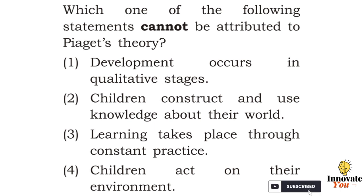Question 2. Which one of the following statements cannot be attributed to Piaget's theory? Option 1: Development occurs in qualitative stages. Option 2: Children construct and use knowledge about their world. Option 3: Learning takes place through constant practice. Option 4: Children act on their environment.